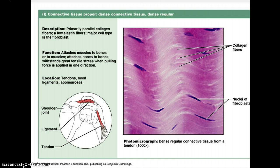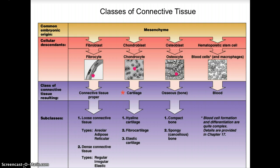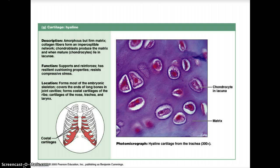Our next group is cartilage. The mesenchyme develops into chondroblasts, which form chondrocytes. This class of tissue is called cartilage, and there are three types: hyaline cartilage, fibrocartilage, and elastic cartilage.